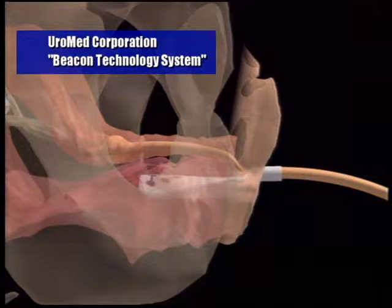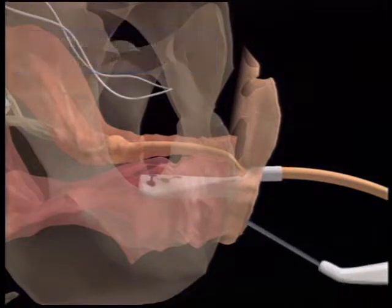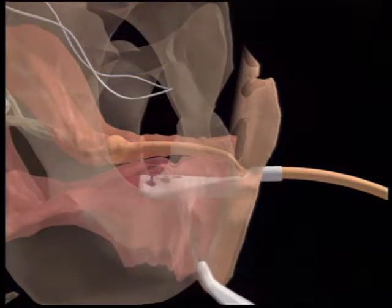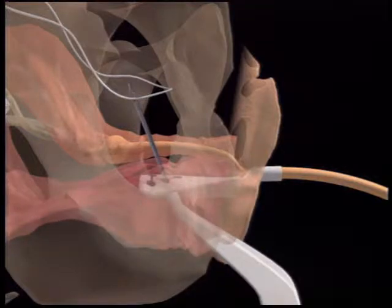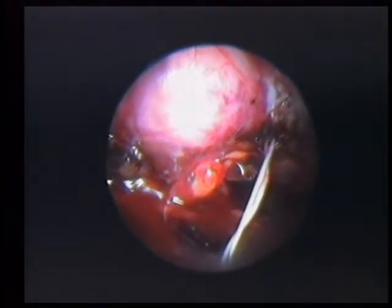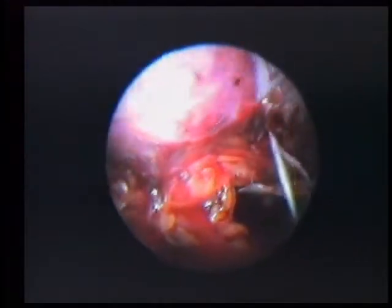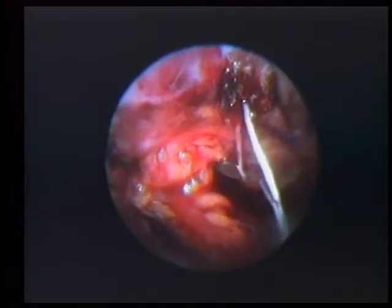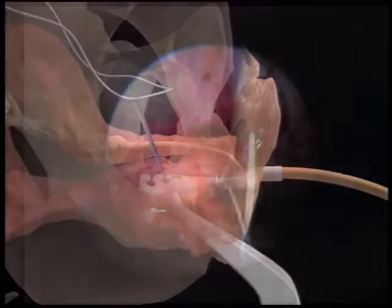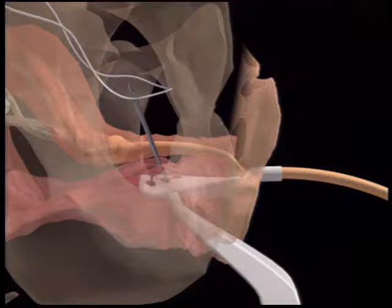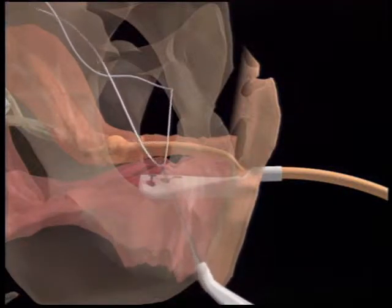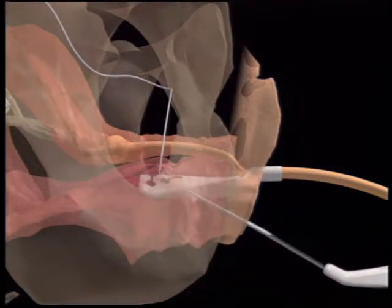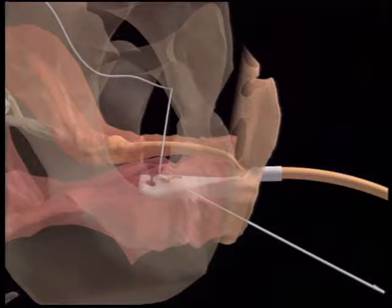With an upward motion, the periurethral fascia is penetrated and the retriever is advanced into the space of Retzius. The retriever captures a suture on the corresponding side of the guide. The notched end is used to ensnare the suture tails. With a downward motion, the retriever needle is withdrawn through the vaginal guide and secured outside the vagina with a hemostat.